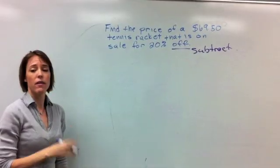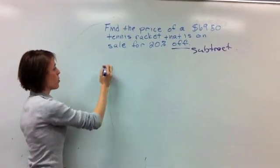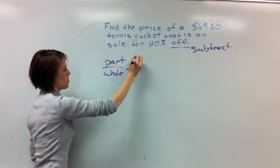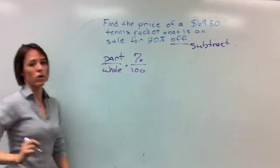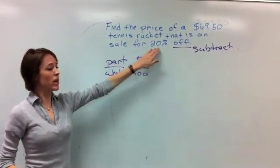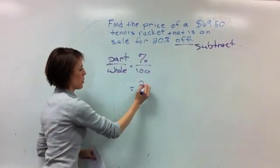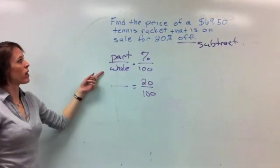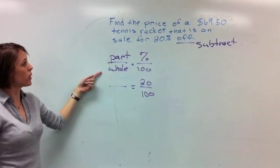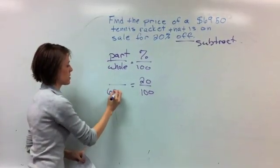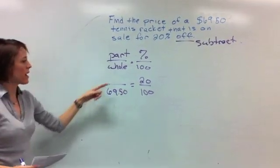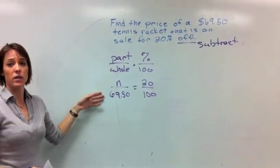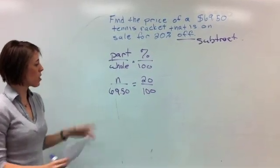Just like we've done in every other single problem, we're going to set up our word ratio. So we have our part and our whole equals our percent over 100. We have our percent. Our percent is 20%. So we know automatically that that is 20 over 100. And our whole amount is going to be the whole that we are going to pay. We're talking about finding the 20% of the $69.50. So that is our whole amount. And we want to find out what 20% of that is. So that is going to be our variable of n. This looks familiar. Everything else we've always done.